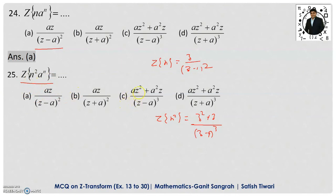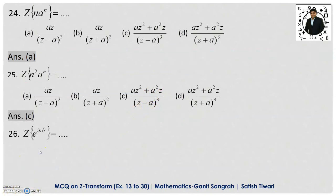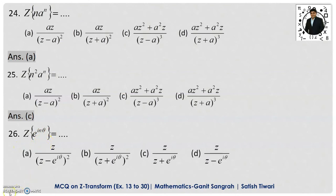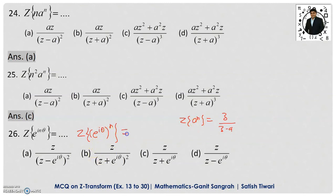The answer for example 25 is option C: (az² + a²z) / (z−a)³. Example 26: Z-transform of e^(inθ). The basic formula is Z-transform of aⁿ = z/(z−a). Here e^(inθ) = (e^(iθ))ⁿ, so compare with aⁿ where a = e^(iθ). Therefore Z-transform of e^(inθ) = z/(z − e^(iθ)), and option D is correct.